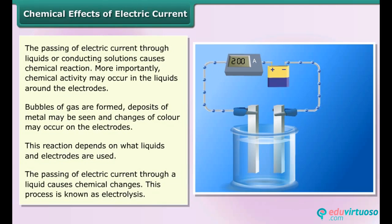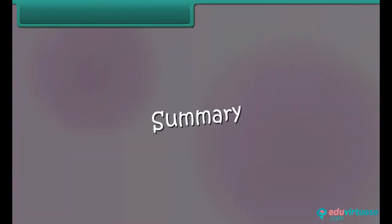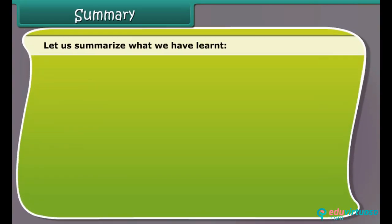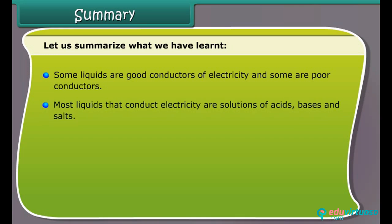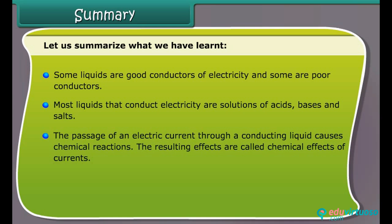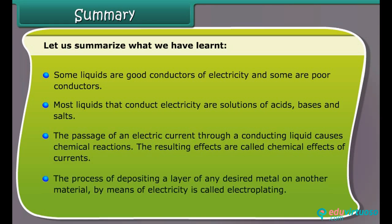The passing of electric current through a liquid causes chemical changes; this process is known as electrolysis. To summarize: some liquids are good conductors of electricity and some are poor conductors. Most liquids that conduct electricity are solutions of acids, bases and salts. The passage of an electric current through a conducting liquid causes chemical reactions, called chemical effects of current. The process of depositing a layer of any desired metal on another material by means of electricity is called electroplating.